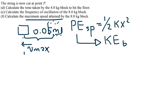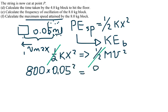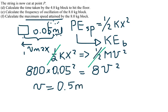Setting spring potential energy equal to kinetic energy: one-half × k × x² = one-half × m × v². Canceling the one-half on both sides: 800 × (0.05)² = 8 × v². Solving gives v = 0.5 meters per second. That is the maximum velocity of the 8 kilogram block.